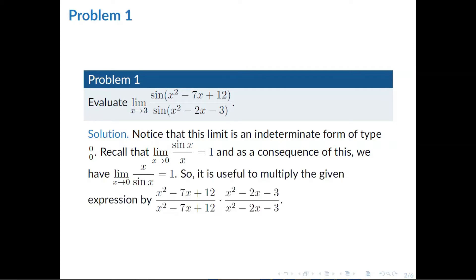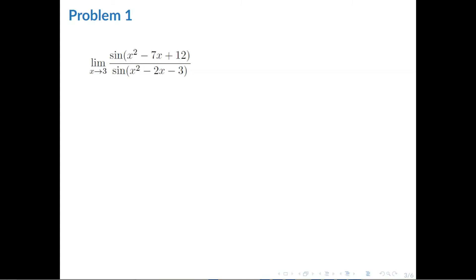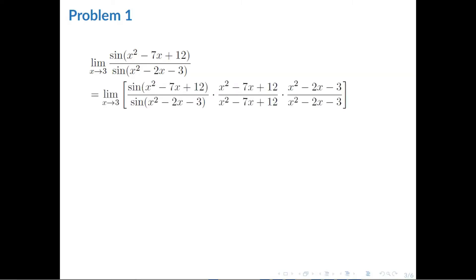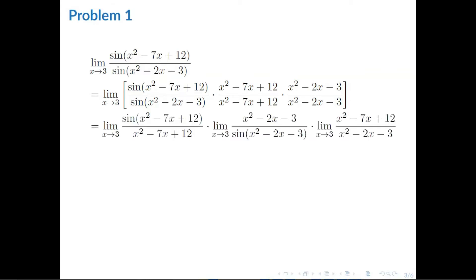That means it will be a good idea to multiply the equation by (x² - 7x + 12) all over (x² - 7x + 12), so that once you cancel that out, it will be equal to 1. And also multiply by (x² - 2x - 3) all over (x² - 2x - 3) for the other part of the equation. So, let's do that — we have the limit of sine(x² - 7x + 12) over (x² - 7x + 12), all over (x² - 7x + 12) times (x² - 2x - 3) over (x² - 2x - 3). Then we group them up.